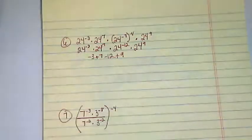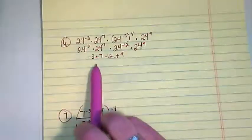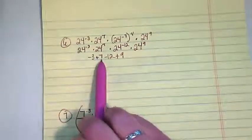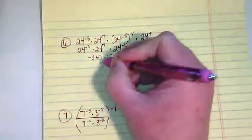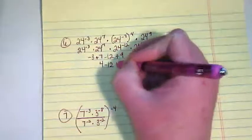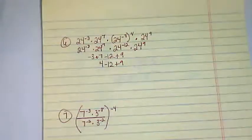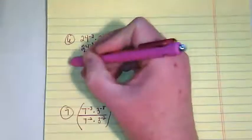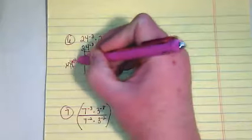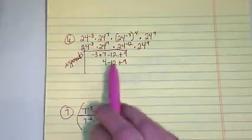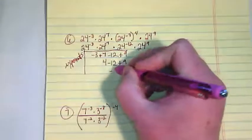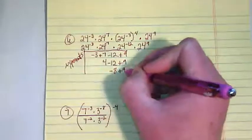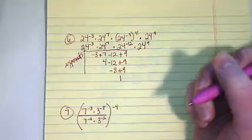So we work from left to right. Negative 3 plus 7 would be 4, minus 12 plus 9. Let me do a little line here to show this is just the exponents. We'll get the base back in there at the end. 4 minus 12 would give us negative 8, plus 9 would give us 1.